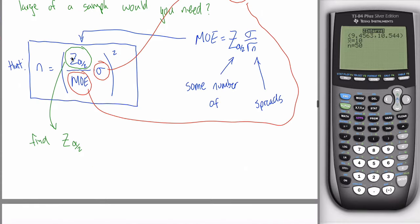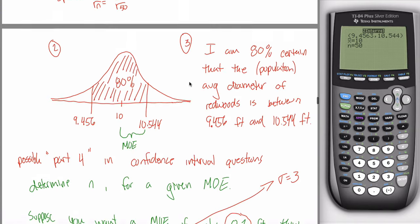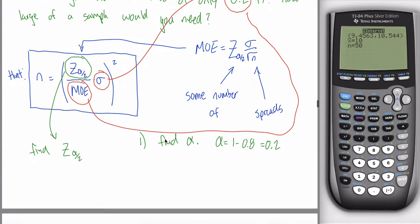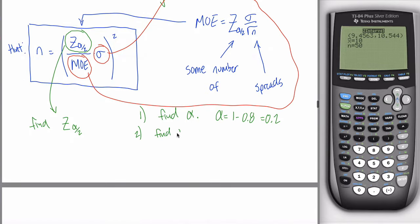Now we need alpha. Step one: find alpha. Alpha equals 1 minus 0.8, which equals 0.2 — this 0.8 came from the 80% confidence interval. Step two: find alpha divided by 2. In the subscript it's not alpha, it's alpha over 2. Alpha divided by 2 is 0.2 divided by 2, which is just 0.1. So cut it in half and get 0.1.